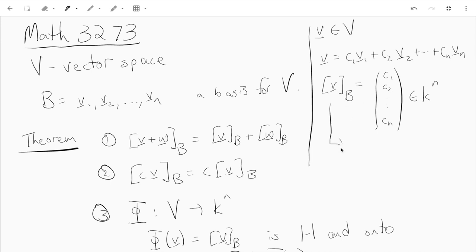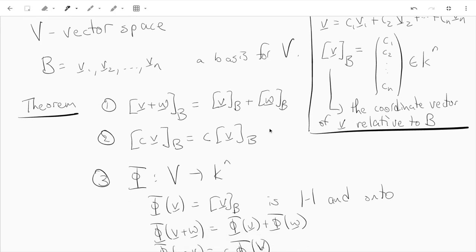So this is called the coordinate vector of V relative to B. We start from there and in this short video I just want to establish that the coordinate vector has these nice properties. If you take the sum of V plus W, the coordinates of that is just the sum of coordinates of V plus the coordinates of W.